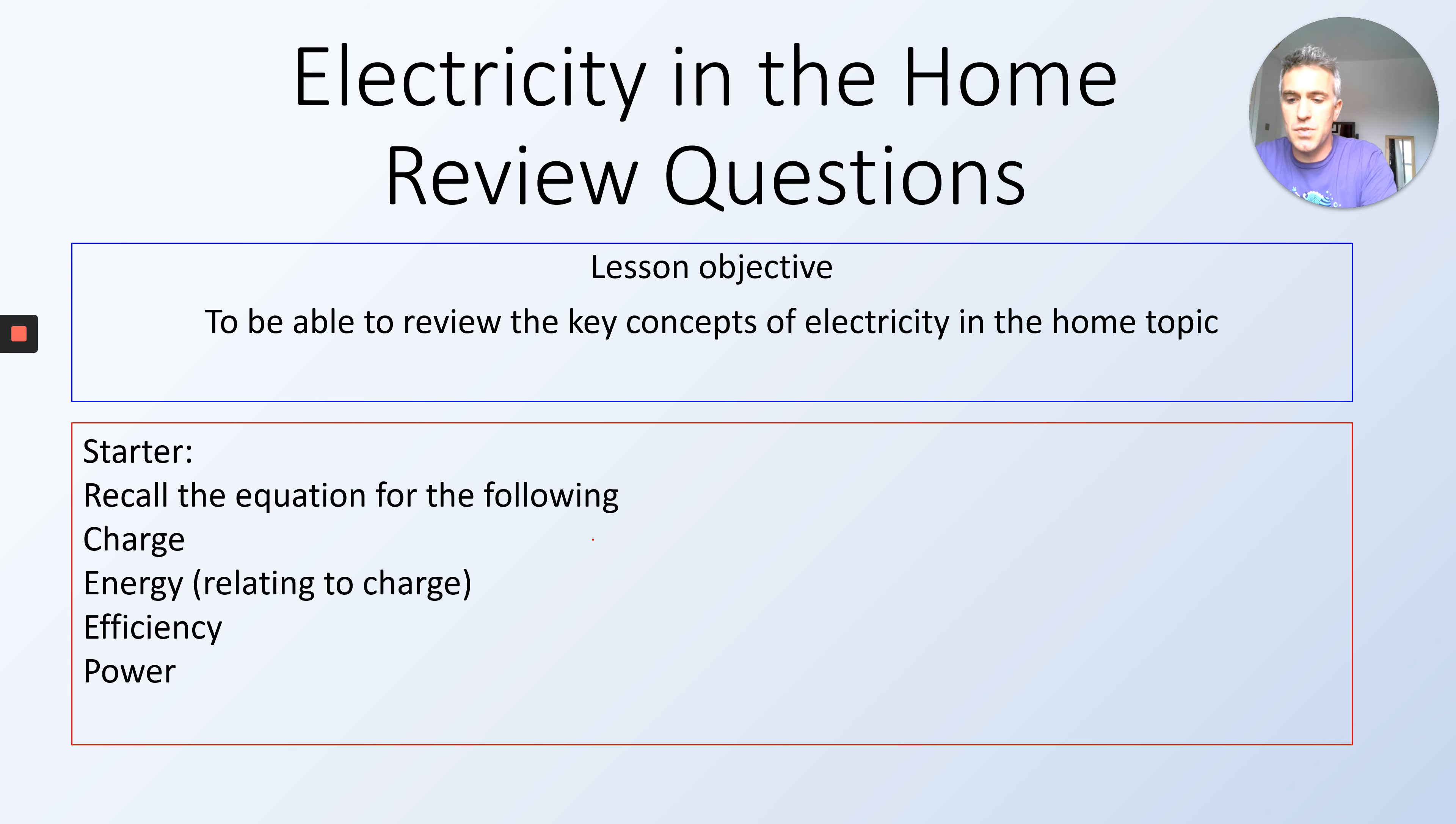Okay, so hopefully you've written the answers down. The equation for charge Q is equal to I times t, charge equals current times time. Energy is equal to Q times V, charge multiplied by potential difference. Efficiency is useful output divided by input.